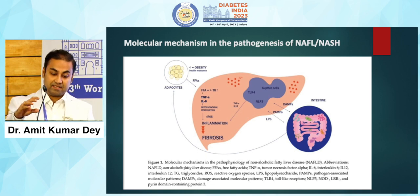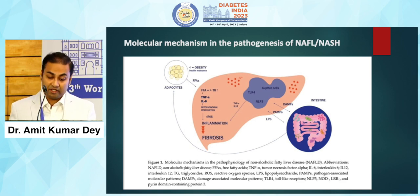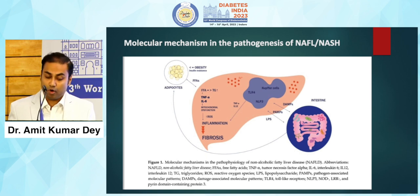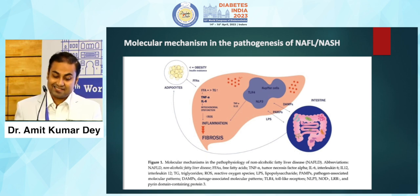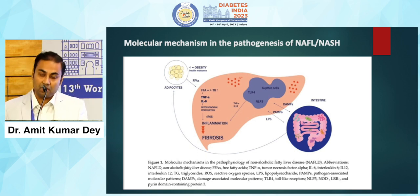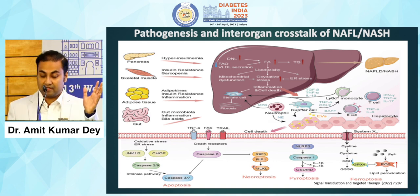At the molecular level, NASH or non-alcoholic fatty liver involves mitochondrial dysfunction and release of reactive oxygen species, leading to inflammation and various chemokines like TNF-alpha and interleukin-6. At the same time, various lipopolysaccharides and other links to the gut and intestines mean that gut microbiota also plays a significant role, because the intestinal barrier breaks down and that also leads to progression of NAFLD. This is a schematic summary of the pathogenesis and the interorgan crosstalk in NASH.